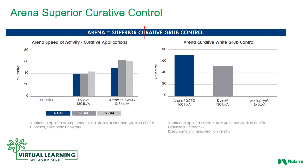Arena also has very good curative control. The chart on the left shows the speed of Arena on third instar northern masked chafer grubs at six days, nine days, and 12 days after treatment — at all those evaluation timeframes Arena clearly showed better control than Dialogs. The chart on the right from Virginia Tech shows that 14 days after treatment on third instar masked chafer grubs, Arena is again a better control option.